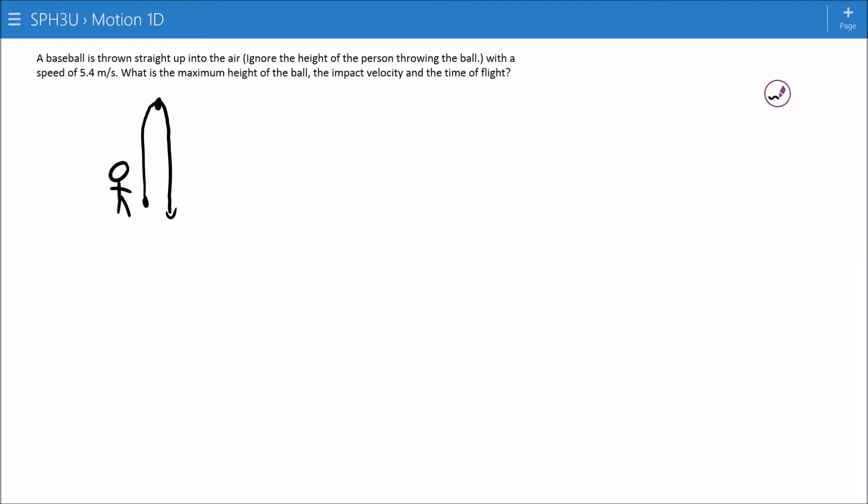What that means, then, is that at the maximum height, the velocity of the object, when it's actually reached at the top of the motion, is zero. This is something that isn't written anywhere in here in the question otherwise, other than it says it's the maximum height of the ball, so it's something you need to be aware of. The acceleration due to gravity is still negative 9.8 meters per second squared, and the initial velocity is 5.4 meters per second.